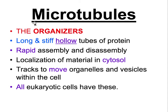Microtubules are not for strength — they are there to organize the layout of the cell. Found only in certain regions outside the nucleus, they form long, stiff, hollow tubes of protein subunits that can rapidly assemble and disassemble. They serve as roadways or tracks to access far reaches of the cell's interior, moving organelles, vesicles, and other materials in directions specified by their orientation. All eukaryotic cells, including plant cells, have microtubules.